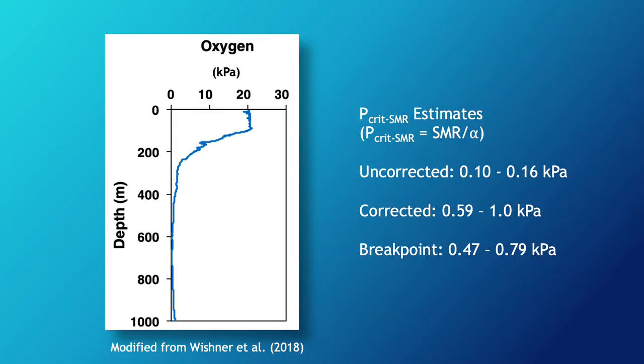While the differences in P_crit between the corrected and uncorrected data sets may be small on an absolute scale, that small difference is incredibly important when considering the ecology and biogeography of oxygen minimum zone species. The figure on the left shows the oxygen profile for the copepod's habitat. Below 400 meters, oxygen is very low, and small vertical changes can mean the difference between life and death for this animal.